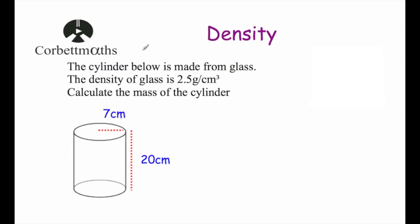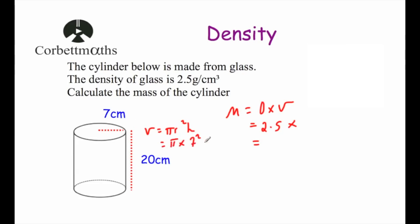Our last example: a cylinder is made from glass with a density of 2.5 grams per centimeter cubed. Work out the mass of the cylinder. Mass = density × volume, so we first need the volume of the cylinder. The volume of a cylinder = π r² × h. So that's π × 7² × 20, which equals 980π, or as a decimal, 3078.760801. It's important not to round this value yet — keep it as 980π or the full decimal in your calculator.